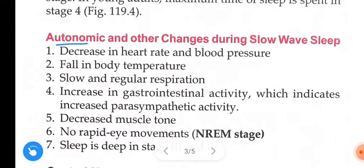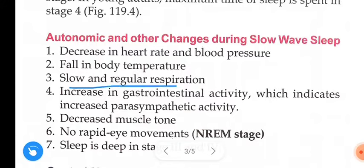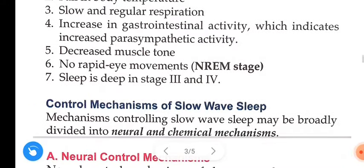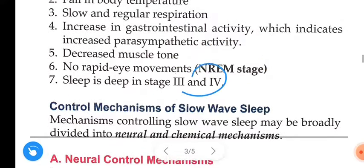Autonomic and other changes during slow wave sleep include: decrease in heart rate and blood pressure, fall in body temperature, slow and regular respiration, increase in gastrointestinal activity — which indicates increased parasympathetic activity — decrease in muscle tone, and no rapid eye movement, hence we call it the non-REM stage. Sleep is deep in stage 3 and stage 4.